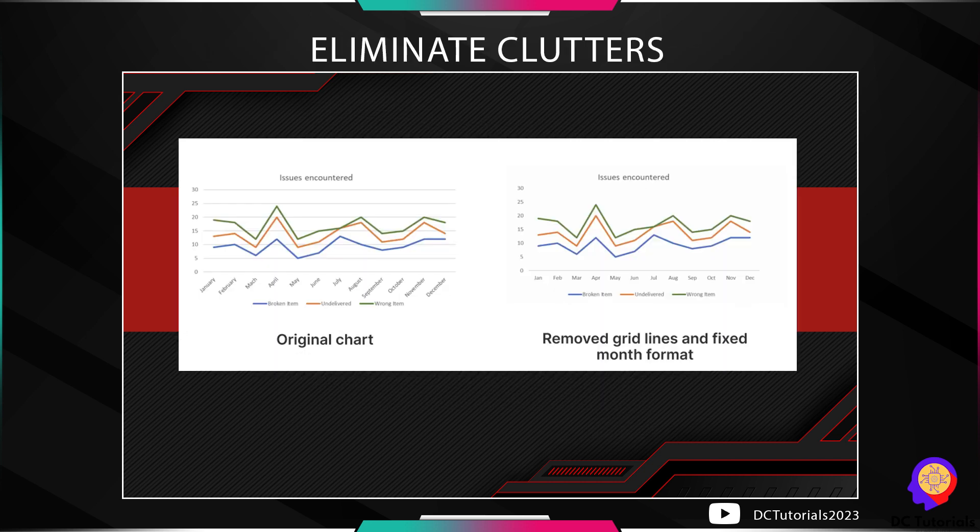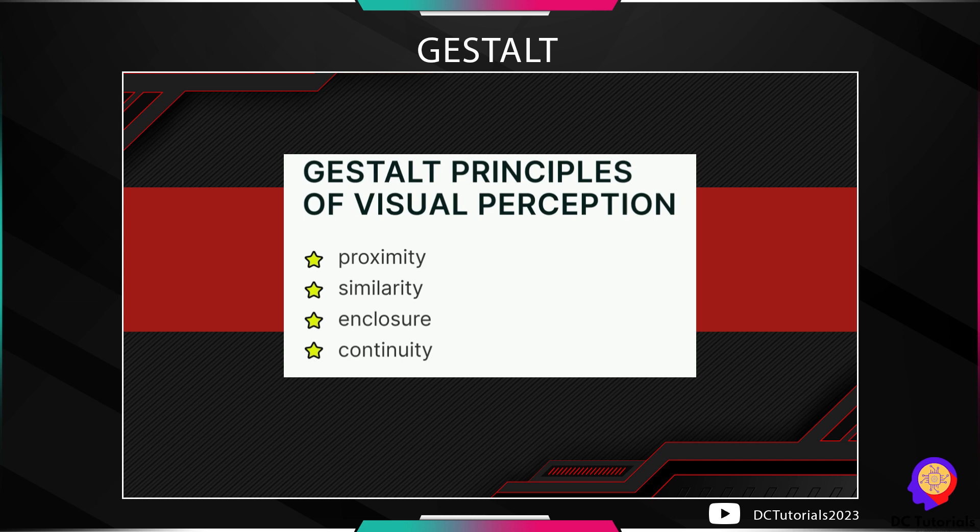Looking at this example, from the original chart, the grid lines were removed and the month labels were shortened to three characters and straightened horizontally to make it more readable. These two steps alone made the chart a lot more clutter-free. It is usual to remove grid lines, especially if they do not guide us to the important axis. We can also refer to the Gestalt principles of visual perception in fixing our visuals.